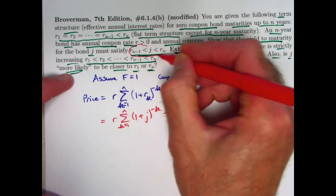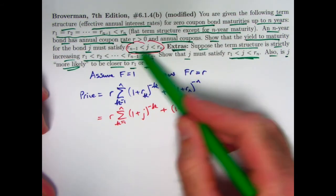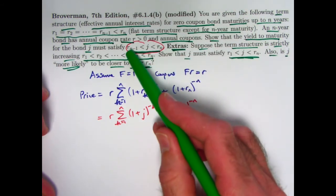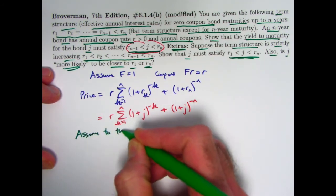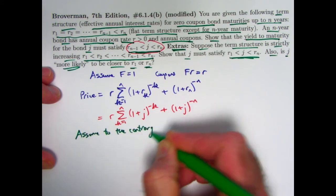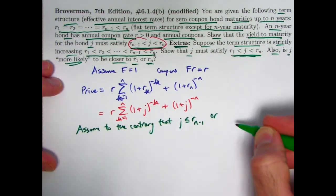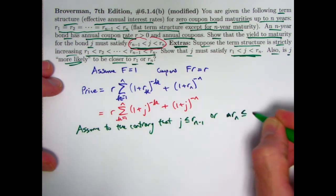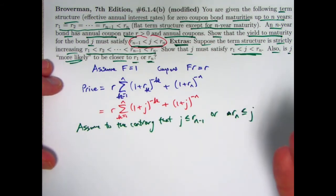Now the goal is to show that these inequalities are true. The nicest way to do that is to argue by contradiction. You want to show j is between these two numbers, so assume to the contrary that it's not — that it's either less than r_{n−1} or greater than r_n. Assume j ≤ r_{n−1}, or r_n ≤ j. This is a fundamental technique for mathematical proofs, and we are essentially doing a proof here.